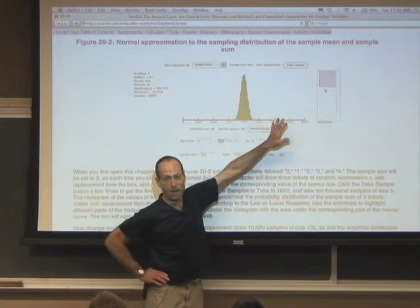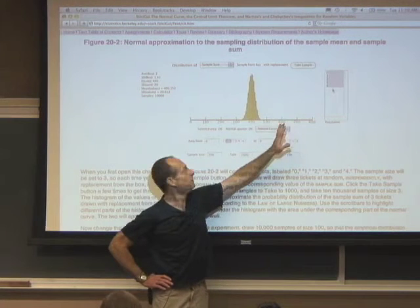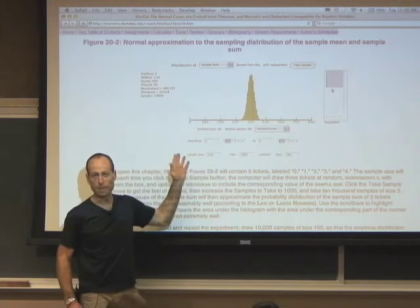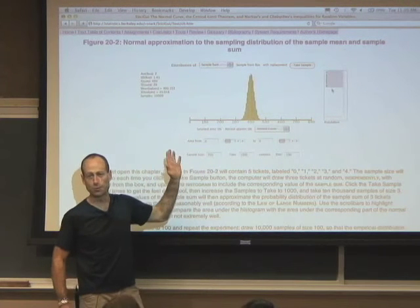If the distribution of the numbers in the box is really, really skewed, then the distribution of the sample sum or sample mean will be skewed. Not as much, but still skewed.